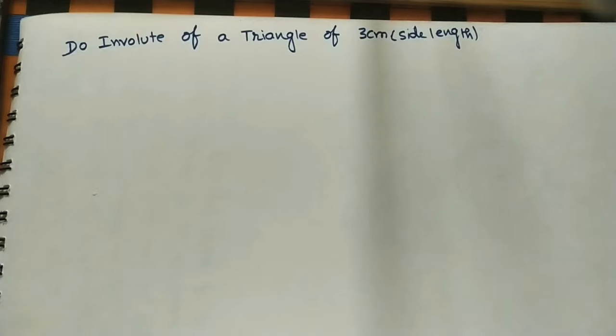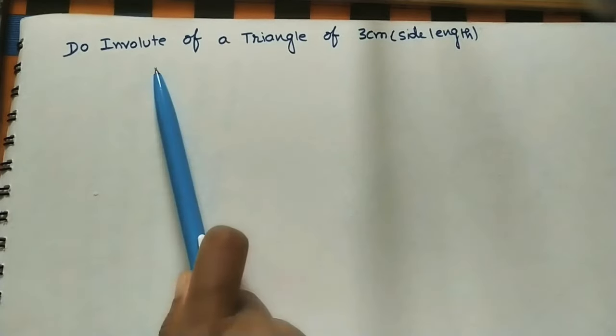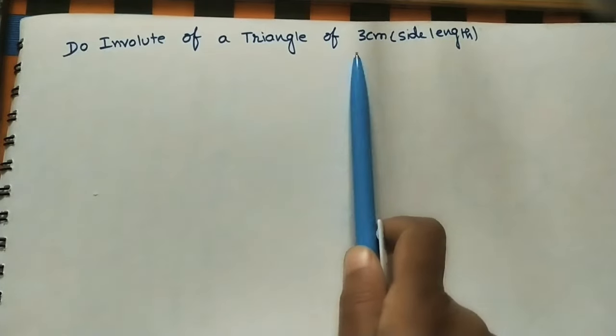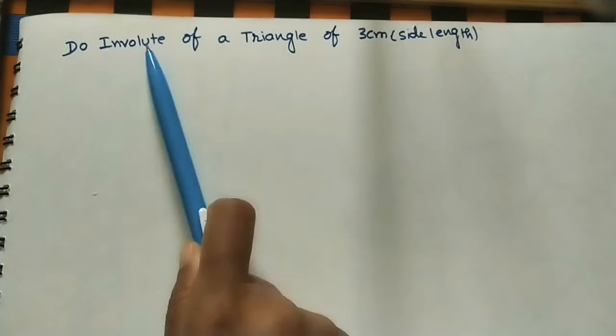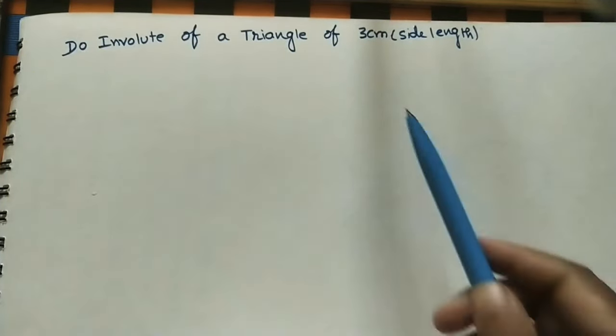Hi friends, welcome to my channel. Let us do an involute for a given triangle of side length 3cm each. First we will build the triangle, after that we will do an involute.